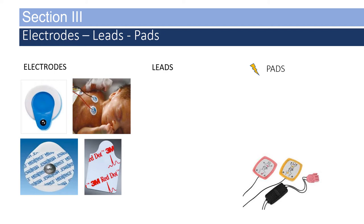Electrodes come from the manufacturer in sealed bags. Once you open the bag, if there are electrodes left within the package, the bag should be folded over on itself and sealed in a Ziploc bag. Open bags of electrodes are usually good for approximately 30 days after opening. Don't preload the electrodes on the wires, as this may alter the integrity of the electrodes as they dry out sitting in the back of the ambulance.